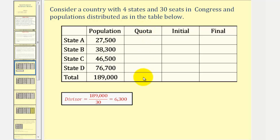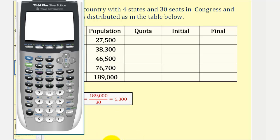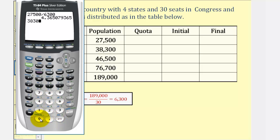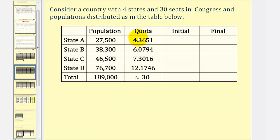Now to find the quotas, we take each state population and divide by 6,300. For state A, the quota would be 27,500 divided by 6,300, which is approximately 4.3651. For state B, we would have 38,300 divided by 6,300, giving a quota of approximately 6.0794, and so on. To save some time, here are our quotas to four decimal places.